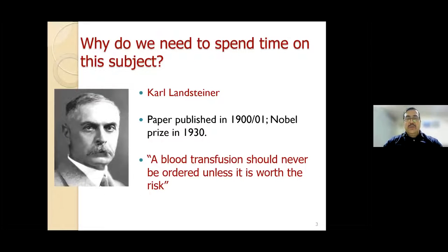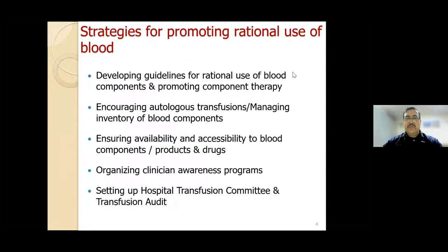Professor Karl Landsteiner, who received the Nobel Prize for ABO blood group discovery, also said that blood transfusion should never be ordered unless it is worth the risk. That's a very important statement—it should only be ordered when the benefit outweighs the risk. The strategies include guidelines for rational use of blood components, promoting component therapy, encouraging autologous blood donation—especially preoperative hemodilution done in the operation theater—managing inventory, ensuring availability and accessibility, running awareness programs, and setting up a Hospital Transfusion Committee with audits.